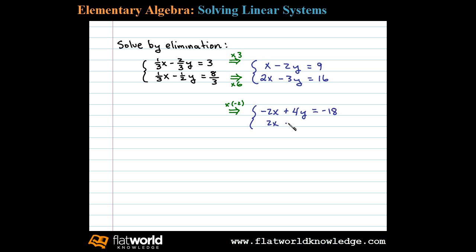Now we'll rewrite the second equation and we have an equivalent system where the variable x is lined up to eliminate. Adding the equations together, we'll have 4y minus 3y is y equals negative 2. Remember, solutions to systems look like ordered pairs.